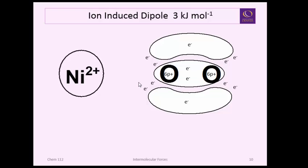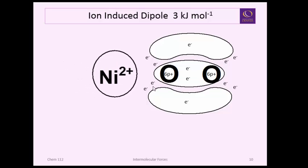this dioxygen you can imagine as it starts to get closer that positive is going to have an attraction on these electrons and since they're delocalized anywhere here in space they might shift over attracted to the nickel well